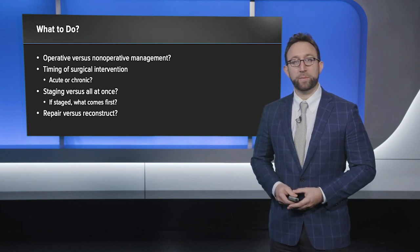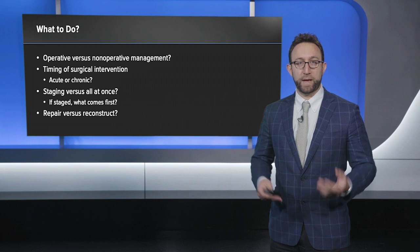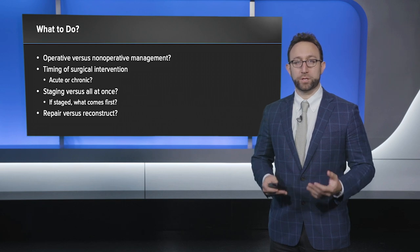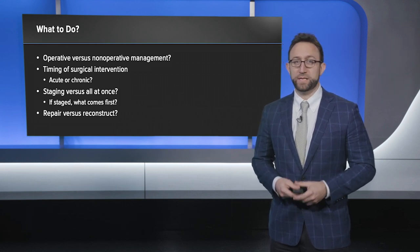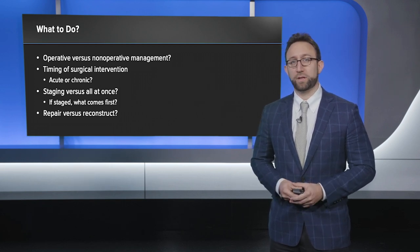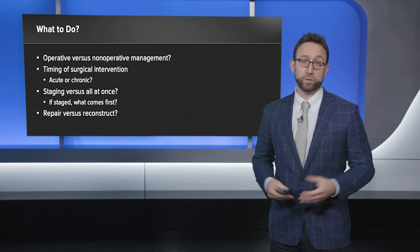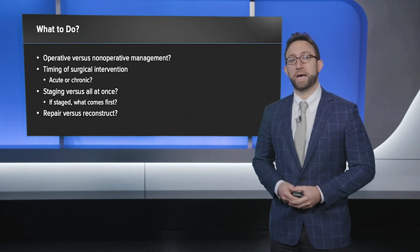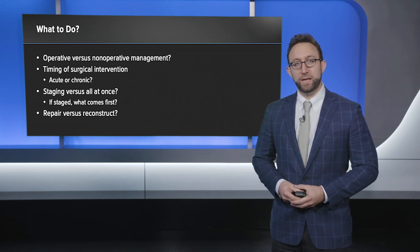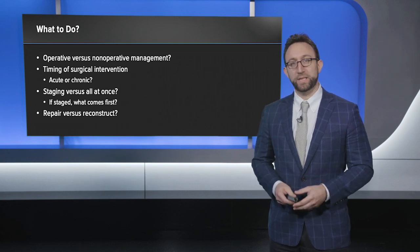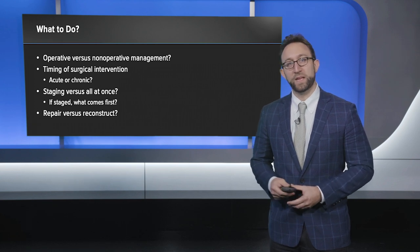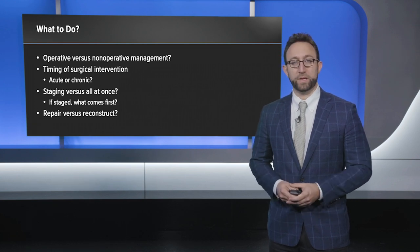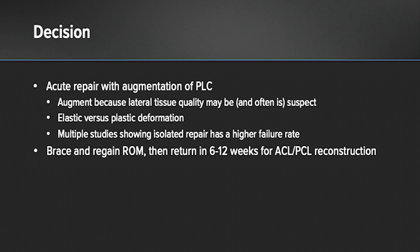The other thing to consider is whether we repair or reconstruct these structures. Repairs are strictly for the collateral ligaments, ideally for avulsions — mid-substance tears really don't do well with repairs. Then you think about reconstructing or augmenting them.